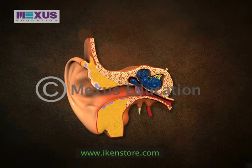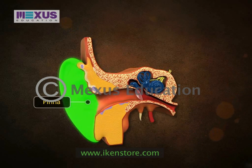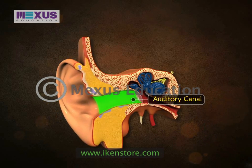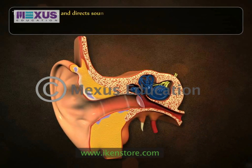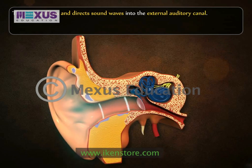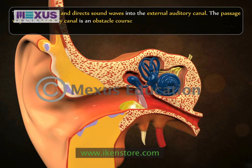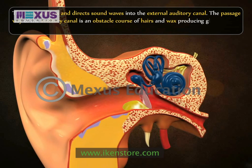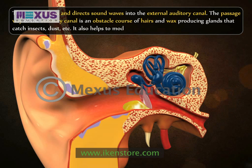The external ear consists of an immovable cartilaginous pinna and an external auditory canal leading inwards. The pinna collects and directs sound waves into the external auditory canal. The passageway of the auditory canal is an obstacle course of hairs and wax-producing glands that catch insects, dust, etc. It also helps to moderate the climate inside the ears.